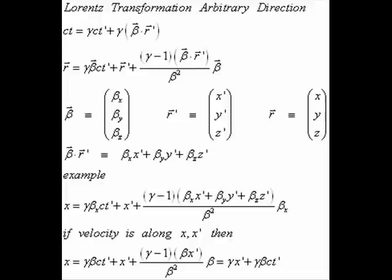You usually see the Lorentz transformation equations for arbitrary direction in terms of big matrices, but this is a way I worked out to express them in a much more compact way. In order to understand what I mean by the expressions in these equations and the way that I have defined them, I must point out first that beta, r, and r' are not true vectors — what I mean by them and how I am defining the inner product for these expressions.